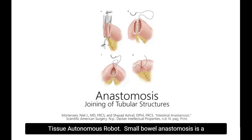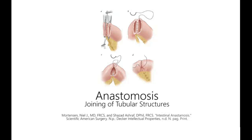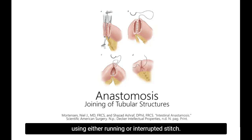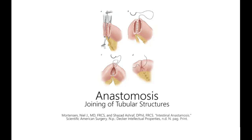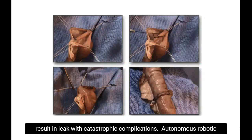Small bowel anastomosis is a procedure performed over a million times each year using manual, laparoscopic, or robotic techniques. During this task, the surgeon stages and reconnects two loops of bowel by suturing adjacent tissues using either running or interrupted stitch. Consistency of these stitches is critical for successful anastomosis, as even a single missed stitch can result in leak with catastrophic complications.